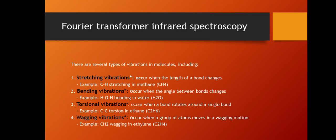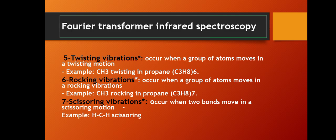Stretching vibration occurs when the length of a bond changes, while bending vibration occurs when the angle between bonds changes. Torsional vibration occurs when a bond rotates around a single bond. Wagging vibration occurs when a group of atoms moves in a wagging motion. Twisting vibration occurs when a group of atoms twist, for example, methyl groups twisted in propane. Rocking vibration occurs when a group of atoms rocks, and scissoring vibration occurs when two bonds move in a scissoring motion.